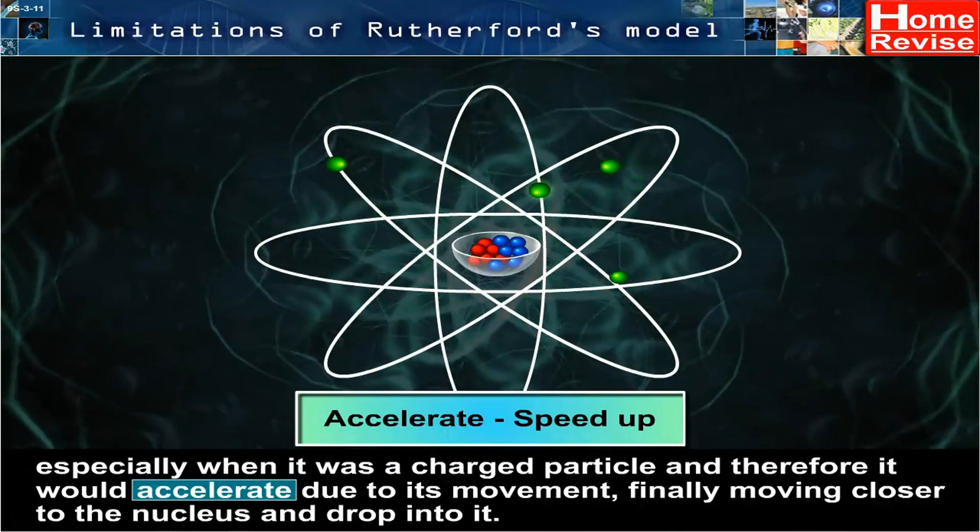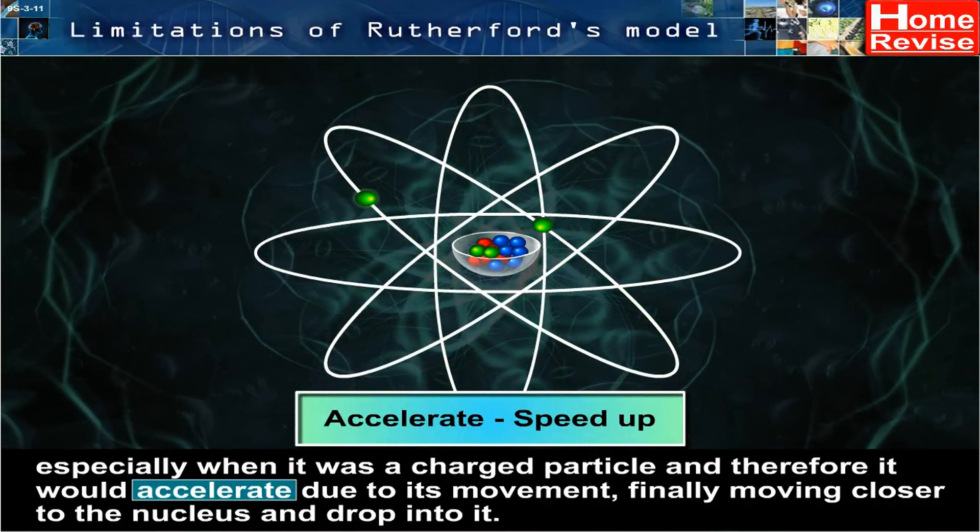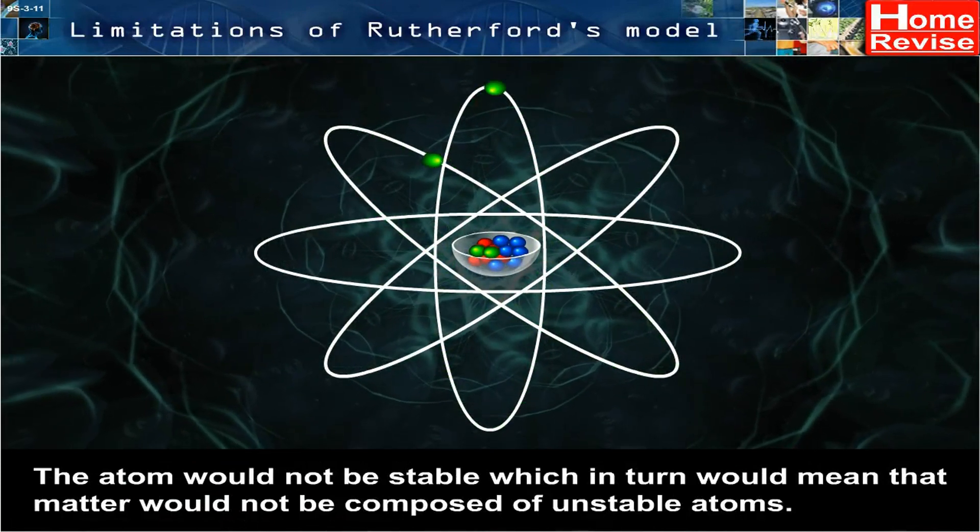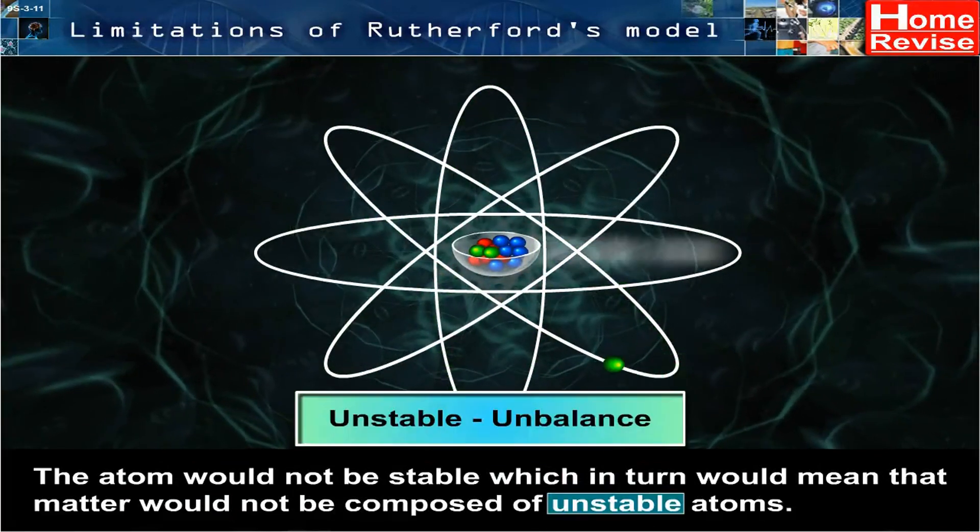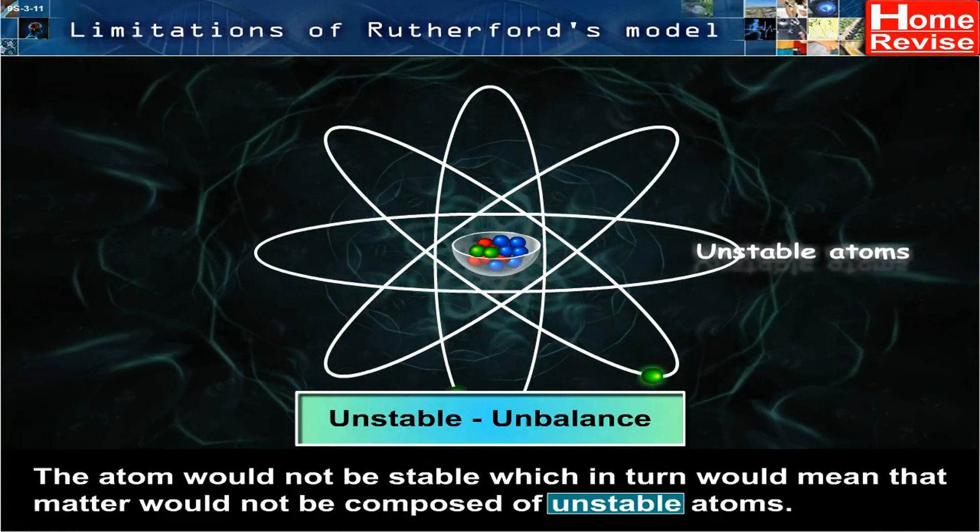Moving closer to the nucleus and drop into it, the atom would not be stable, which in turn would mean that matter would not be composed of unstable atoms.